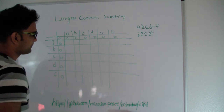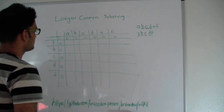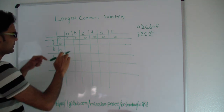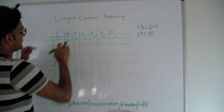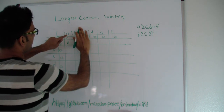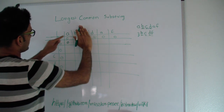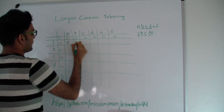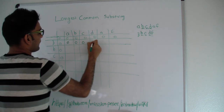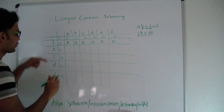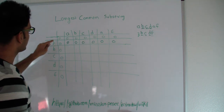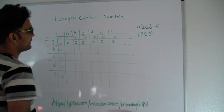If you had two strings A and Z, the longest common substring between them is of length 0. If you had string A, B and Z, the longest common substring again will be 0. If you have string A, B, C and Z, the longest common substring will be 0. So what this represents is: if you had one string A, B, C, D, A, F and another string Z, the longest common substring between them is going to be 0.